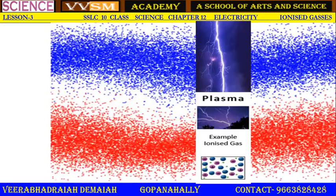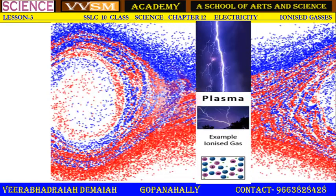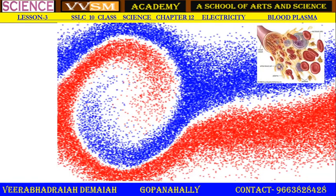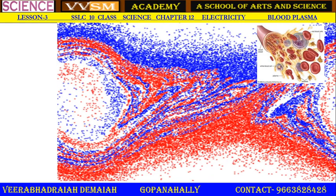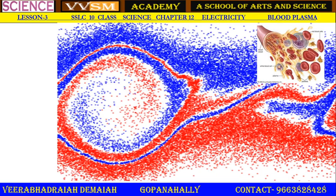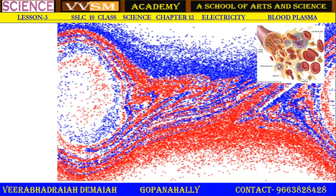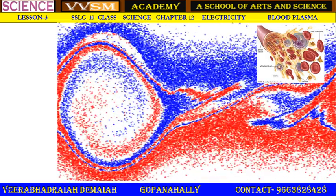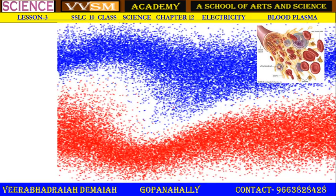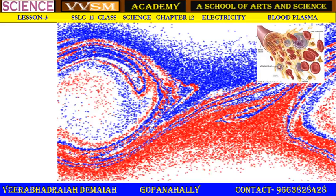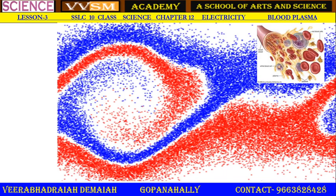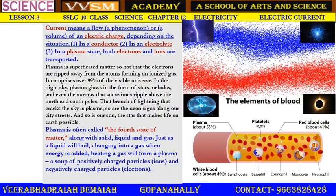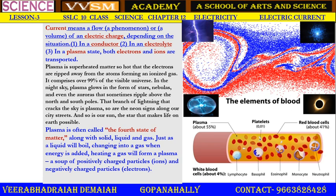Ionized gases in the state of plasma. Blood plasma, for example — if you take blood plasma, it is neither a solid nor a liquid nor a gas. So it is the fourth state of matter. Blood plasma consists of so many microorganisms: red blood cells, white blood cells, platelets, and the blood plasma.